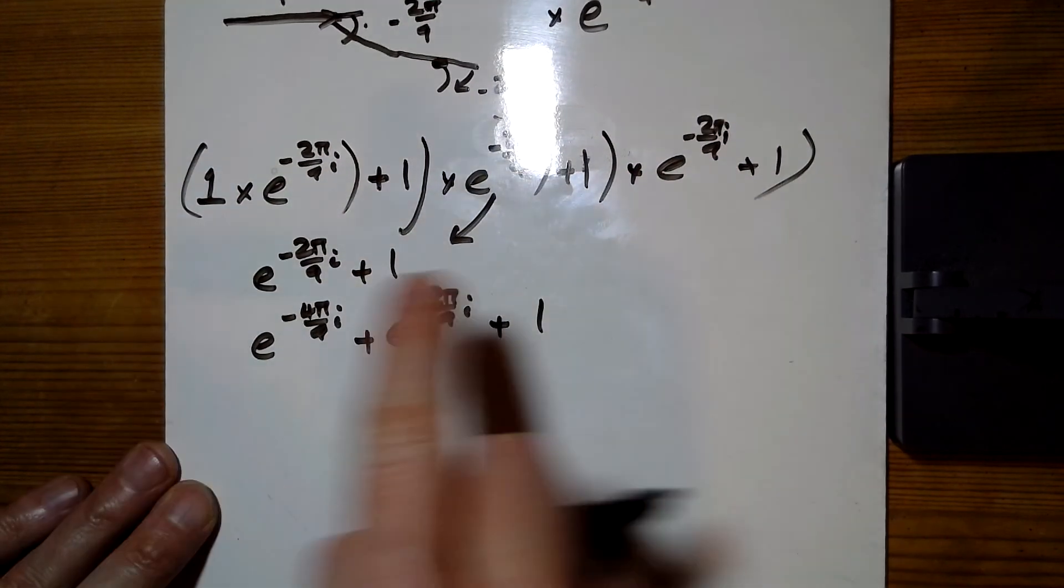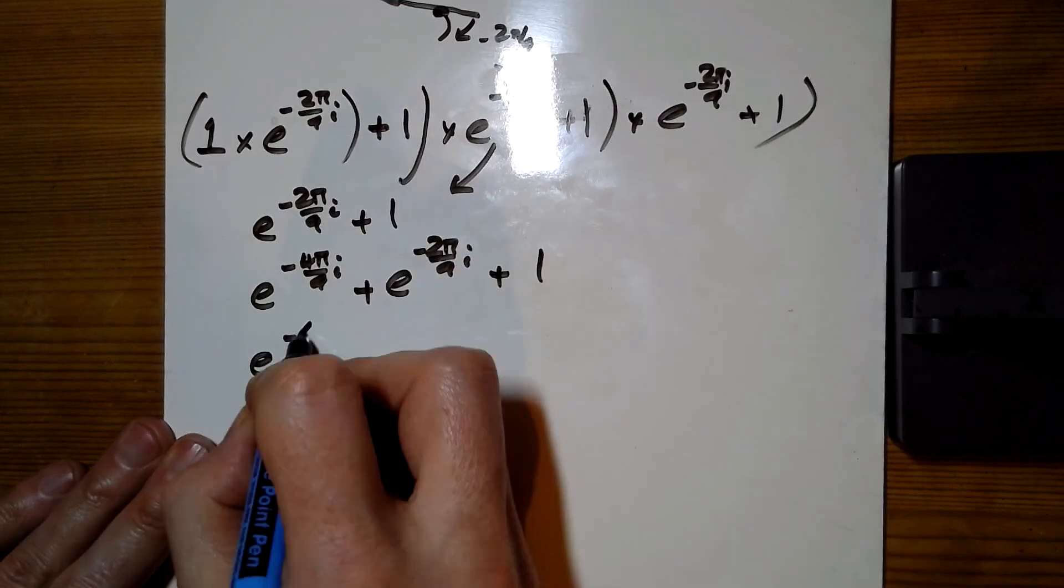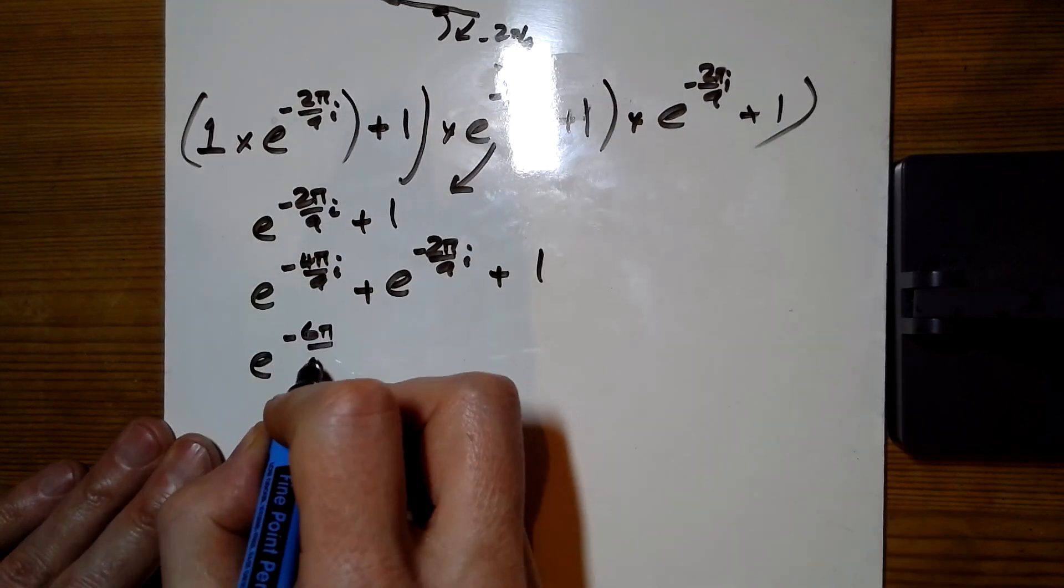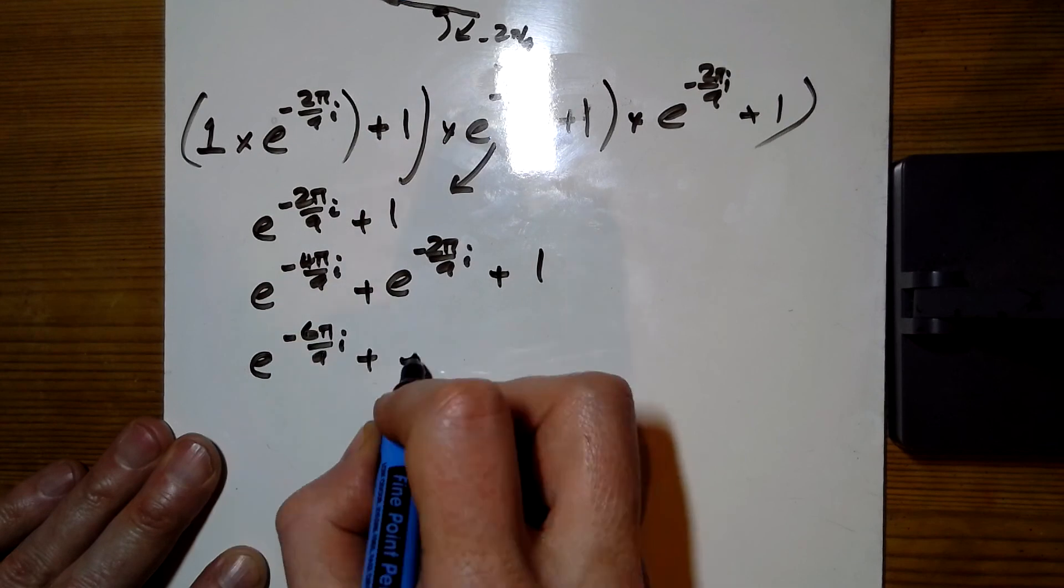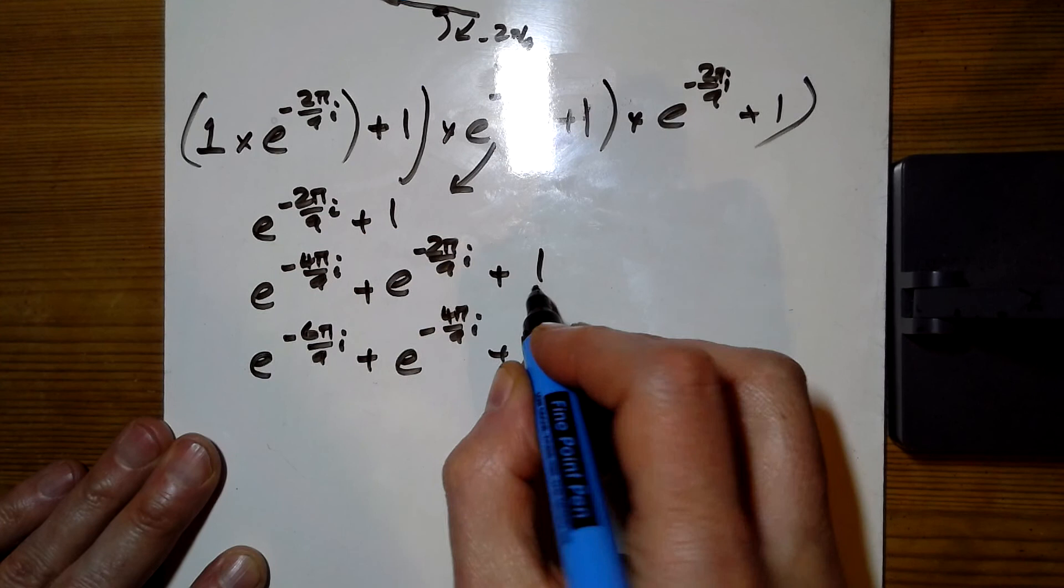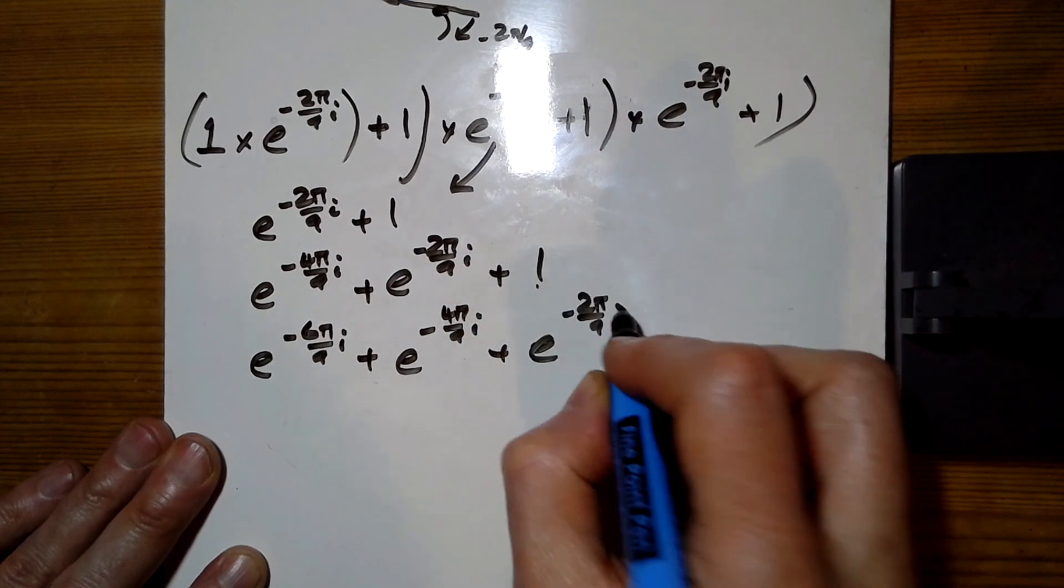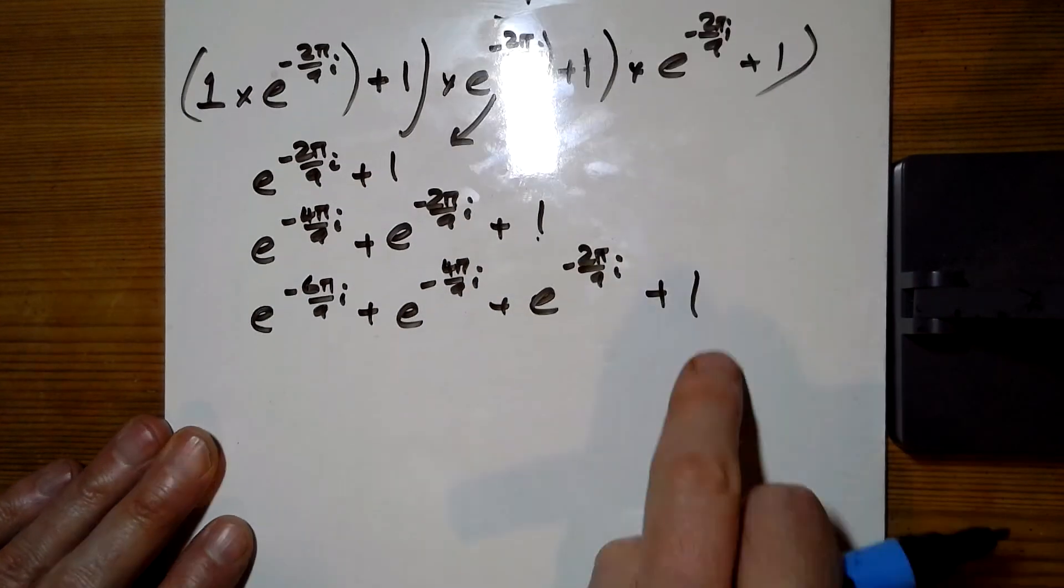Beginning to see a pattern here. Now I'm going to times by it again. So I'm going to get e to the minus 6pi over 9i, plus e to the minus 4pi over 9i, plus 1 times that, e to the minus 2pi over 9i, plus the 1. I'm going to stop there.